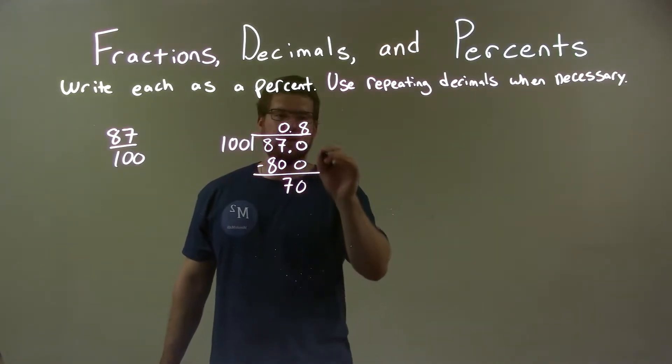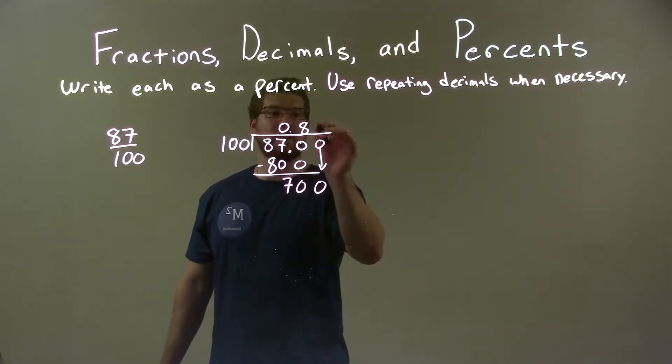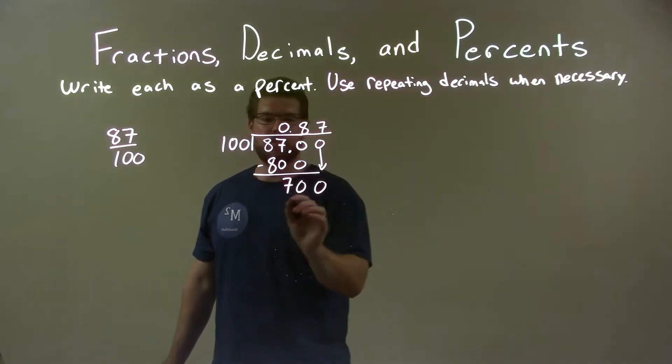100 cannot go into 70. Add another 0, bring it down. We have 700. Well, now 100 can go evenly into 700, seven times. Seven times 100 is 700 and then we're done.